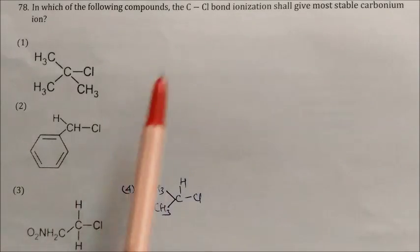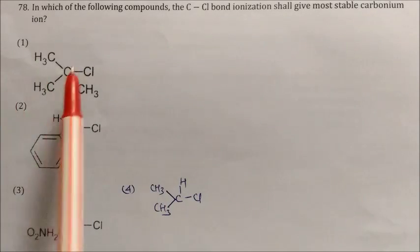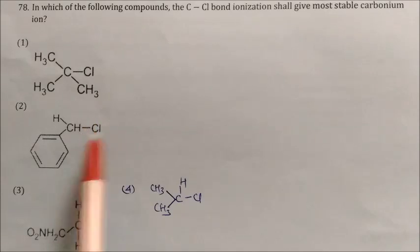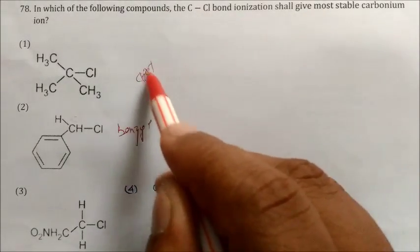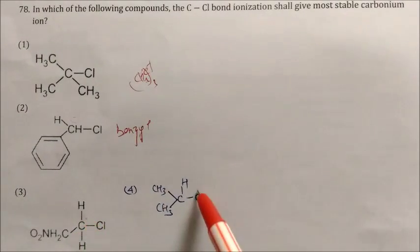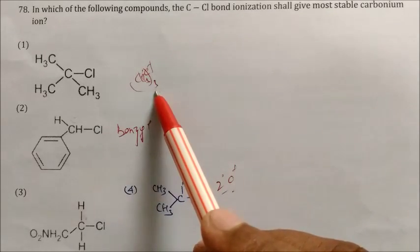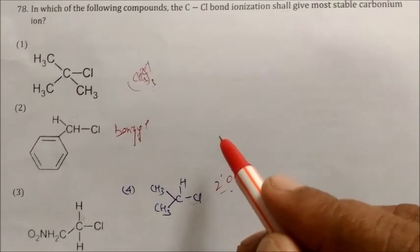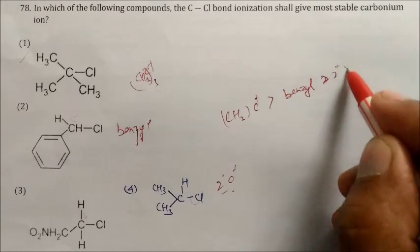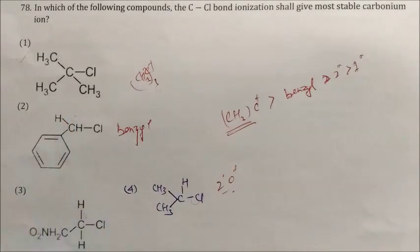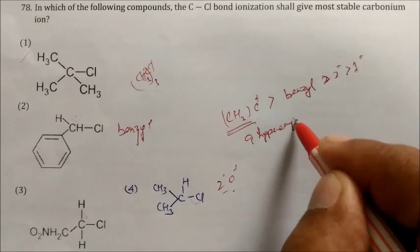Question: In which compound does C−Cl bond ionization give the most stable carbocation? Removing Cl from option 1 gives a tertiary carbocation. From option 2 gives a benzyl carbocation. From option 3 gives a primary carbocation. From option 4 gives a secondary carbocation. A tertiary carbocation with 9 alpha hydrogens for hyperconjugation is more stable than a benzyl carbocation. Answer: option 1.